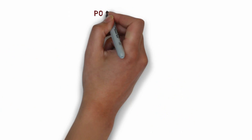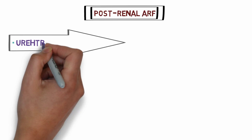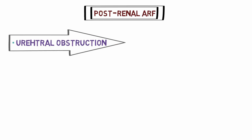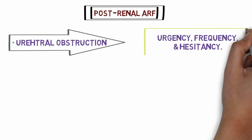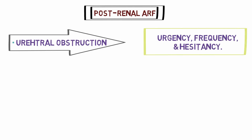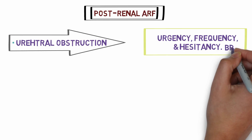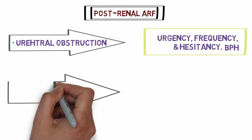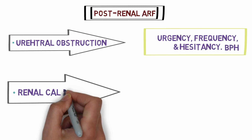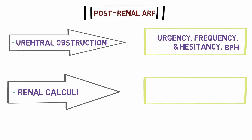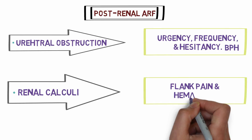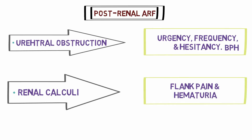Post-renal ARF is mainly caused by obstruction to urine flow, which can be due to urethral obstruction from an enlarged prostate in benign prostatic hyperplasia. These patients have features like urgency, frequency, and hesitancy. Renal calculi can also obstruct the urethra or bladder and cause post-renal ARF, with patients presenting with flank pain and hematuria.